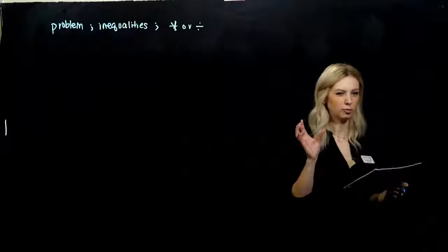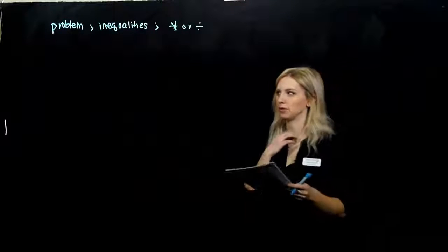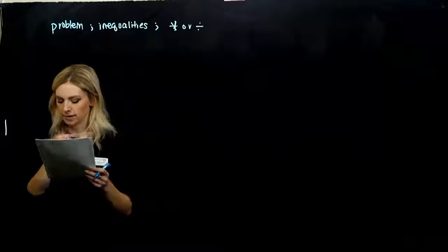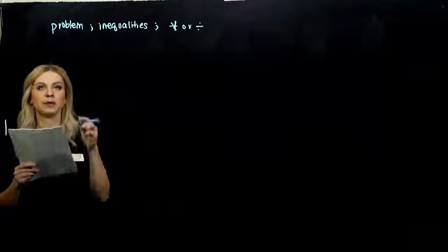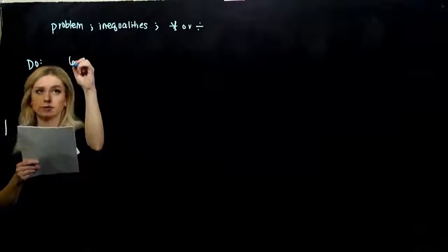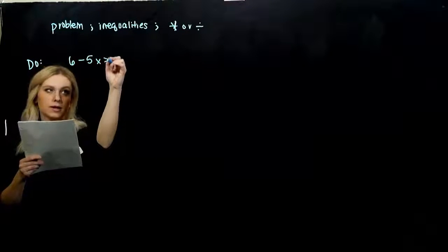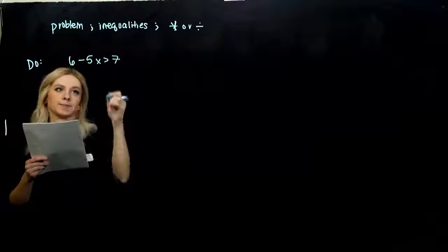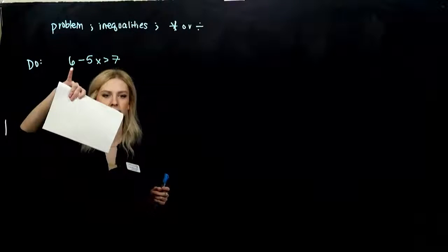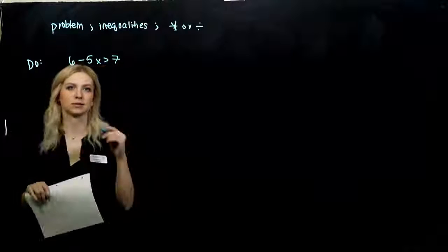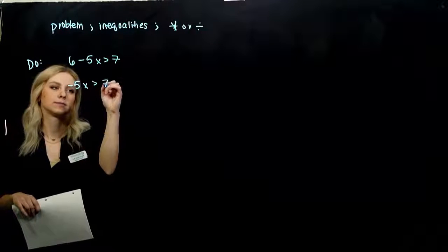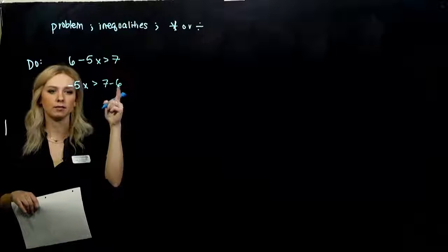We just have that one little piece of extra information: we have to flip the sign if we multiply or divide by a negative. So we're just going to practice a whole bunch of examples. In this case, trying to get x on its own, so I need to move what first? 6. So if I subtract 6 from both sides, it's going to be gone on the left.